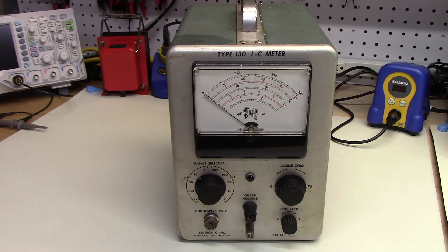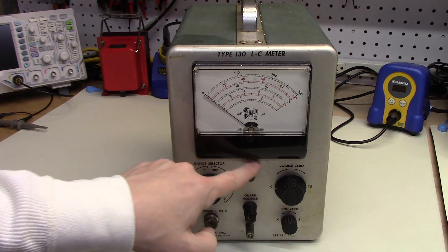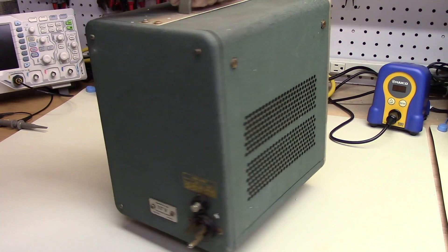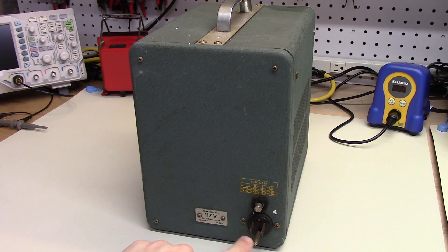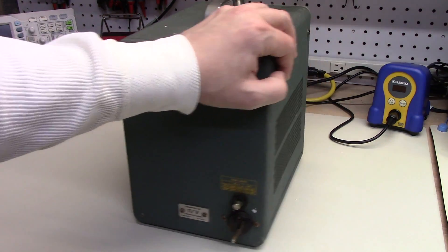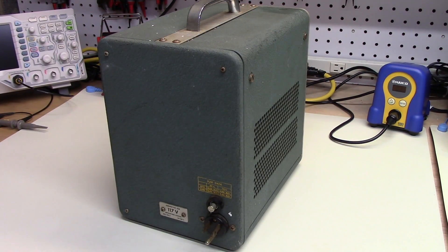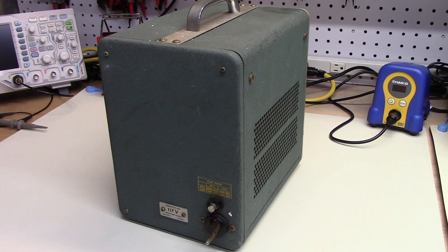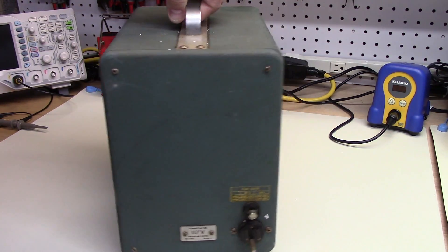But anyway, there we have it. There are some scratches down here. On the back, of course, it didn't come with a power cord. And the fuse holder is missing the cap right here. And just as well because the fuse seems to be stuck in the capless fuse holder.